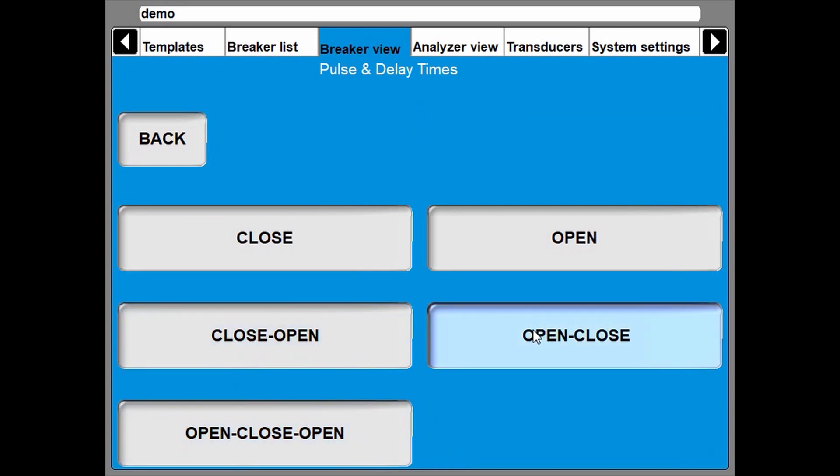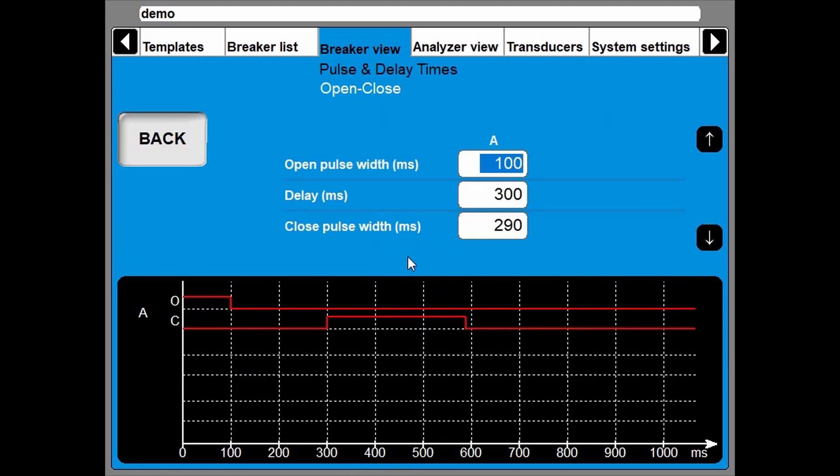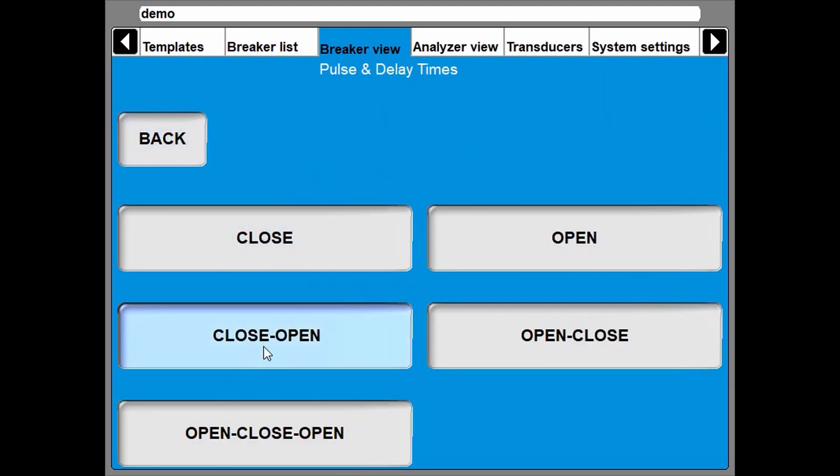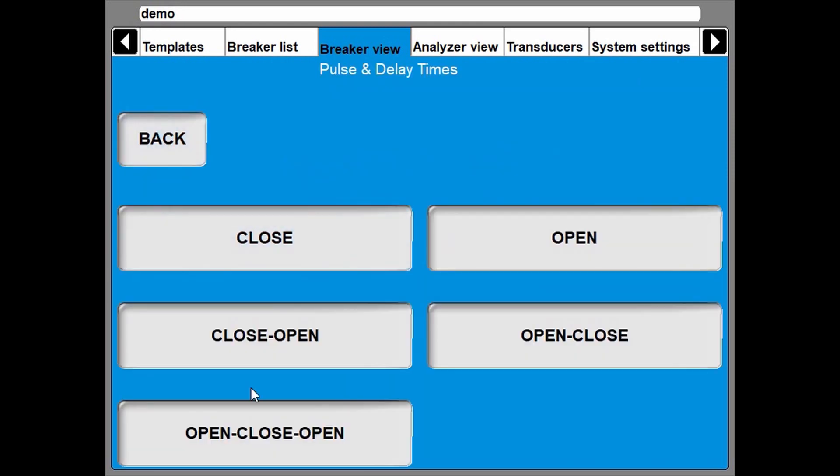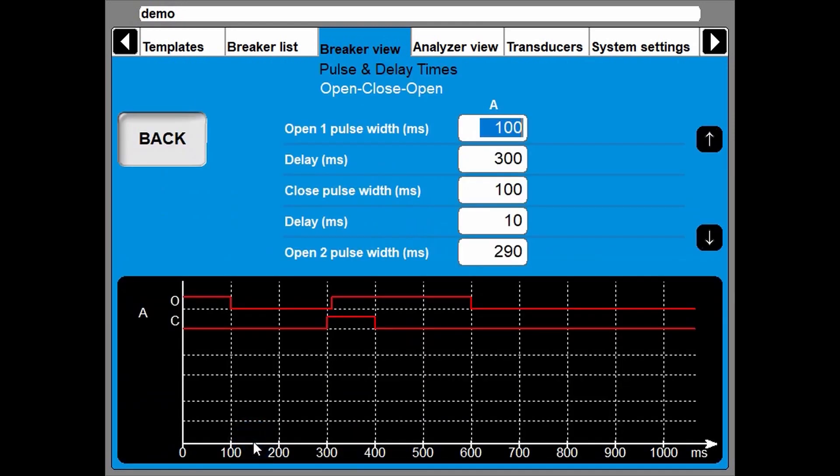For this operation, the delay is already set correct. But here I have to enter a delay of 150 milliseconds. Also on this multiple operation. Before the open pulse. Like that. And this is for the simulator.